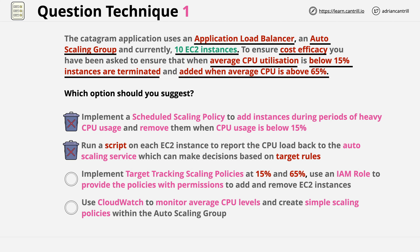Moving on to the third answer, this suggests implementing target tracking scaling policies at 15% and 65%, and immediately this answer eliminates itself. The point of target tracking scaling policies is that you provide a specific single value — say CPU utilization — and auto-scaling adds or removes instances to keep as close to that value as possible. Adding policies for two separate percentages with target tracking makes no sense. The answer also says to use an IAM role to provide the policies with permissions to add and remove EC2 instances, and again this isn't how auto-scaling works — it doesn't use an IAM role. That's another reason to eliminate this answer.